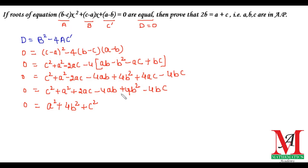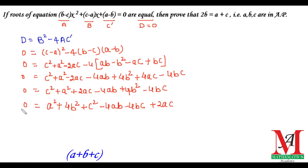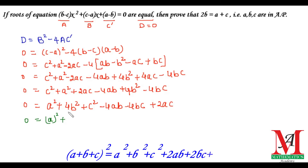On simplification we see that a² is the square of a, 4b² is the square of 2b, and c² is the square of c. Writing the terms in order: minus 4ab, then minus 4bc, and then plus 2ac. We know this is in the form of (a + b + c)² whole square.